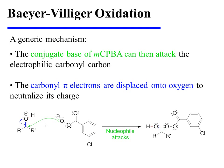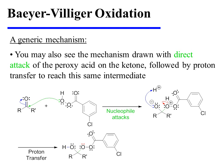The conjugate base of MCPBA can then attack the electrophilic carbonyl carbon. As a result, the carbonyl pi electrons are displaced onto oxygen to neutralize its charge. It's worth noting that you may also see the mechanism drawn with direct attack of the peroxy acid on the ketone, followed by proton transfer to reach the exact same intermediate.